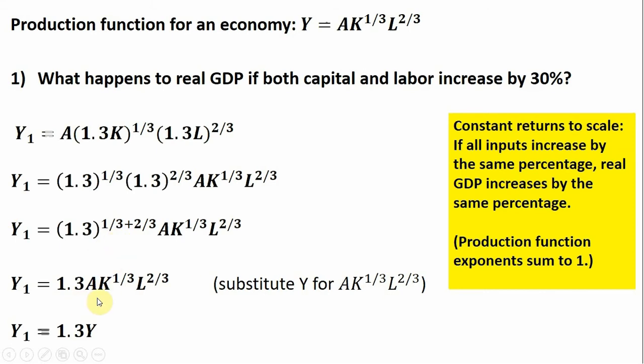Let's make a substitution. The rest of this on the right-hand side, A times K to the one-third and L to the two-thirds, is just Y. Substituting that in, our new output level will be 30% higher than our old output level. This is consistent with the notion of constant returns to scale.